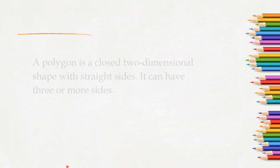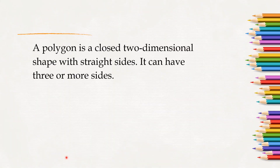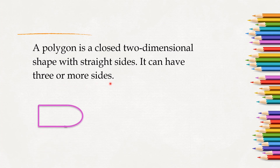What is a polygon? A polygon is a closed two-dimensional shape with straight sides. It can have three or more sides. Look at this figure — is it a polygon? No, it has a curved side, so it is not a polygon. Look at this figure. Even though this is a closed figure, it is not a polygon because it does not have straight sides.